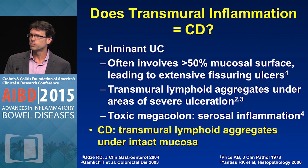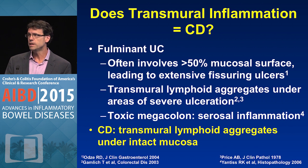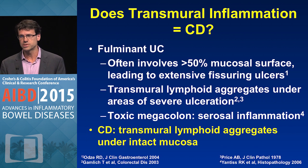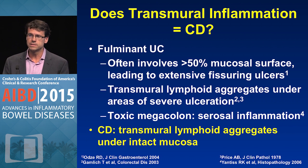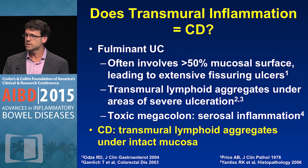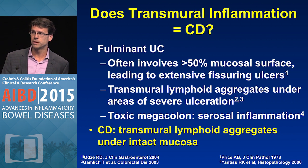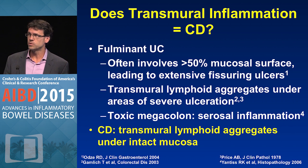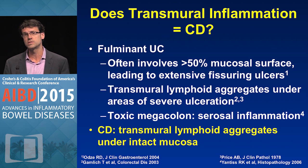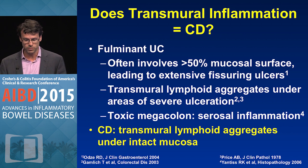Does transmural inflammation mean that you have Crohn's disease? Actually, not exactly. In patients with fulminant ulcerative colitis, you can have deeper fissuring ulcers which extend more than 50 percent of the surface, leading to some transmural lymphoid aggregates under areas of severe ulceration. Even in toxic megacolon, you may see serosal inflammation. The other pathological hallmark feature of Crohn's disease is transmural lymphoid aggregates under intact mucosa — if you see these under intact mucosa, it's by definition Crohn's disease. If you see it under an area of severe ulceration, it may still be fulminant ulcerative colitis.